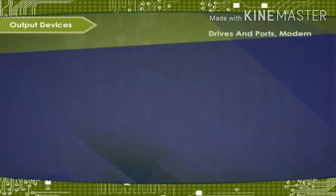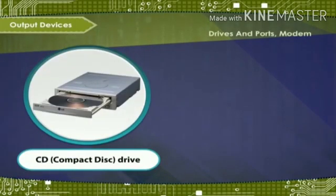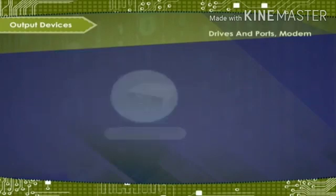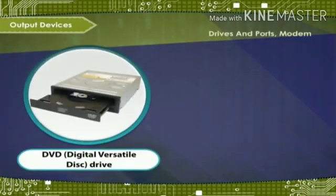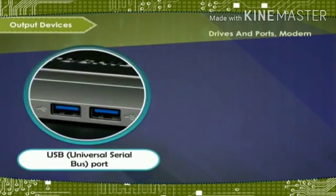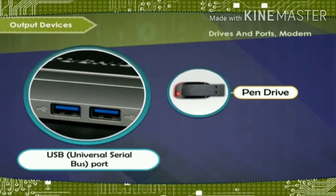Drives and ports — Modem. CD: Compact disk drive — this device is used to read the contents of a CD. DVD: Digital versatile disk drive — this device is used to read the contents of a DVD. USB (Universal Serial Bus) Port — this device is used to connect a pen or flash drive or any USB device.